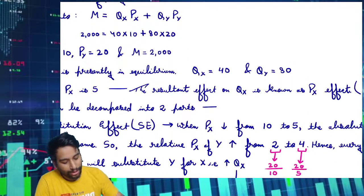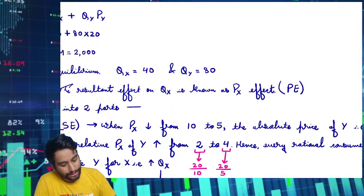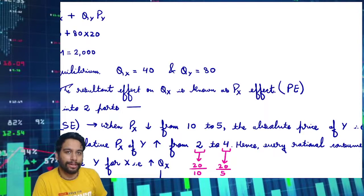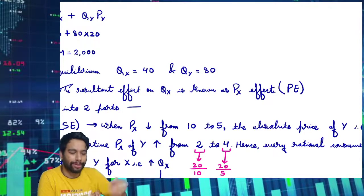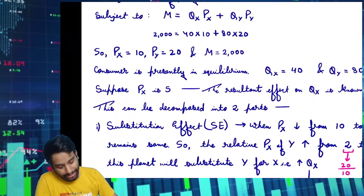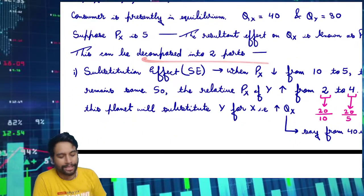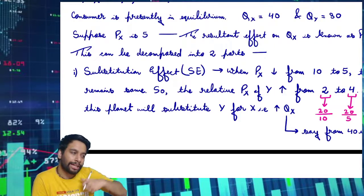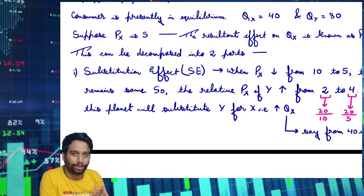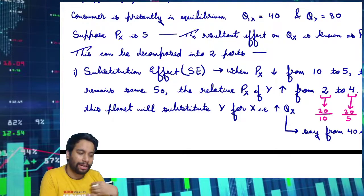Suppose the price of X goes down by 5 rupees, that is it halves. Now the quantity of X कितनी बढ़ती है because of खुद के price के गिरने से, that is known as price effect. This can be decomposed into two parts: substitution effect, because when my price falls, I become cheaper in comparison to the substitute and that's why people will buy me.